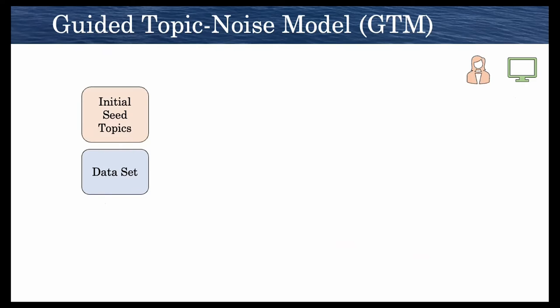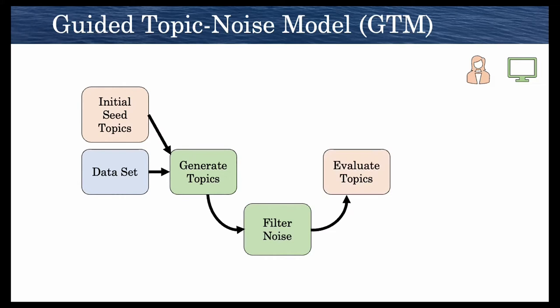Let's look at how guided topic noise model works. GTM takes an initial set of seed topics and a dataset and generates topics based on those two. After it's generated topics, it filters noise so that researchers like Pam can evaluate those topics and see which topics they like, which topics need to be changed, and in doing so they curate seed topics. They take that initial set of seed topics, they add words, they remove words, they might even add or remove an entire topic.